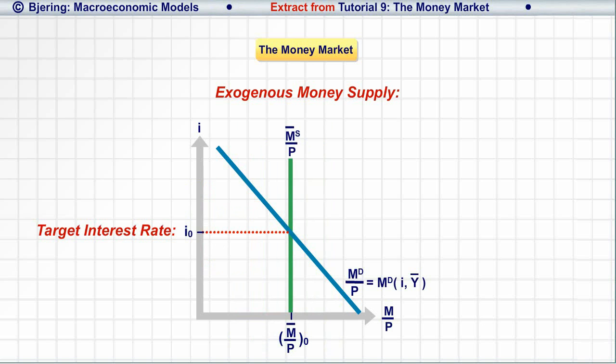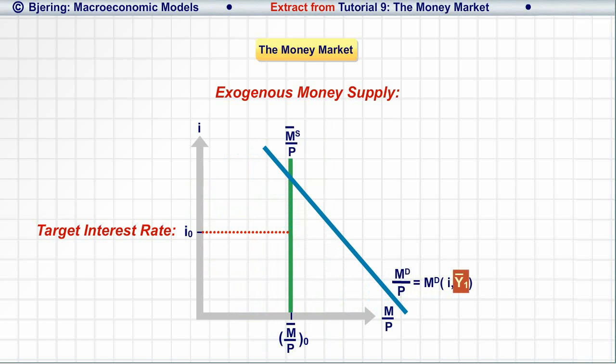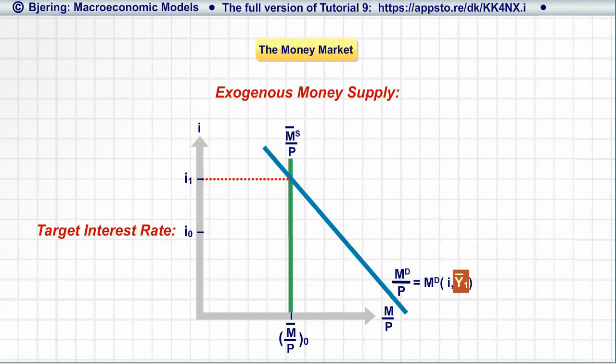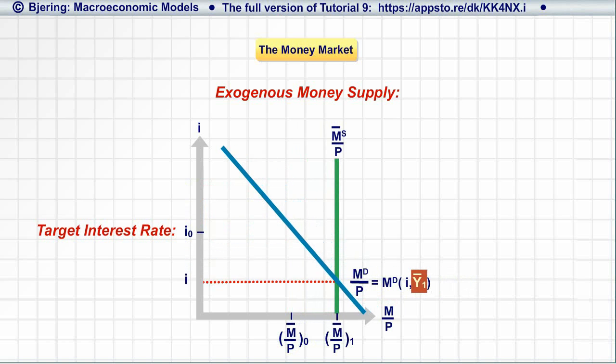However, recall that the demand curve for real money balances is drawn for a given transactions volume, real GDP or Y. If Y increases, the money demand curve shifts to the right, increasing the equilibrium interest rate. So, to maintain a given interest rate when Y increases, the central bank must increase the money supply, and vice versa if Y decreases.